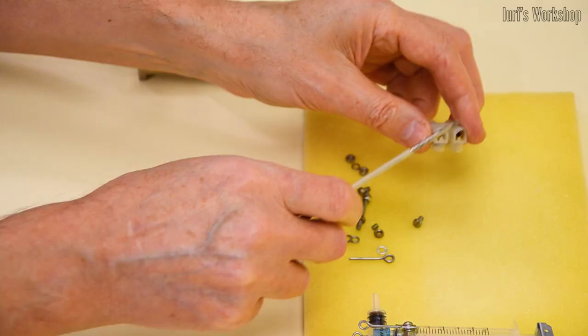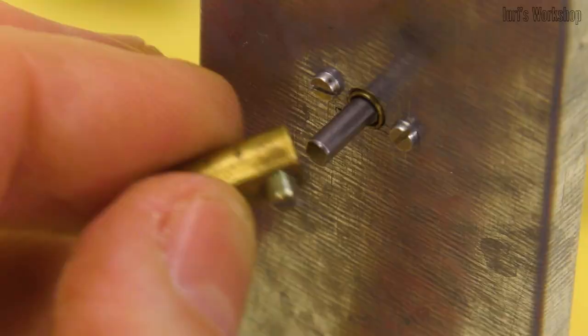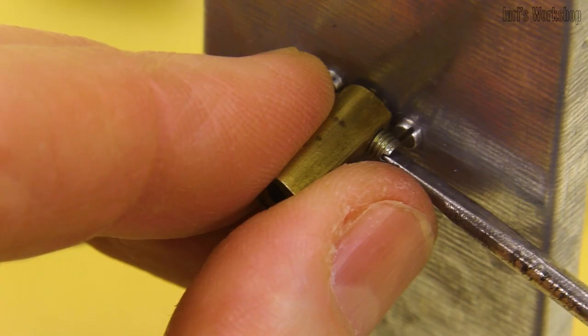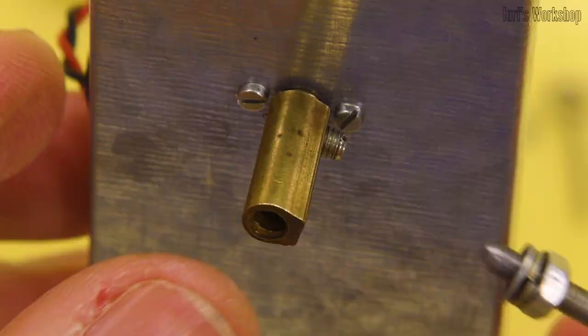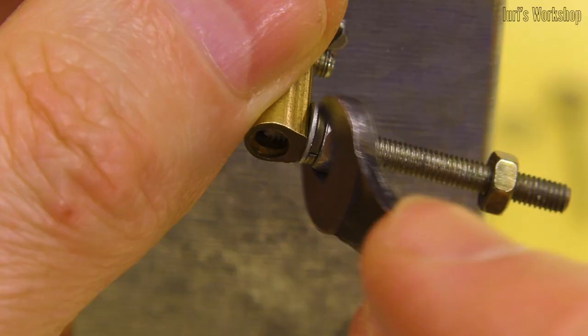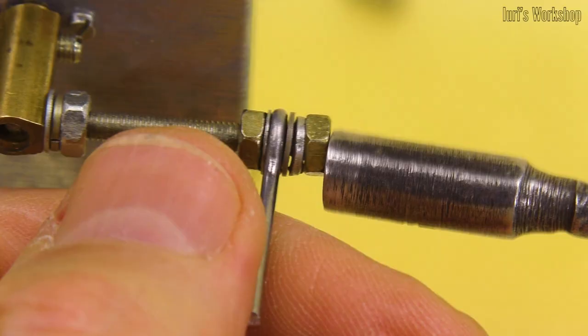The pump is driven by a small geared motor. The crank is fastened to the shaft using a bushing from the electric terminal block. And the length of the crank determines how much liquid will be pumped in one cycle.